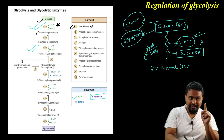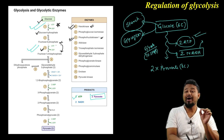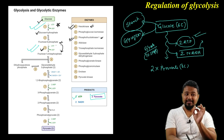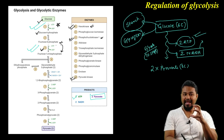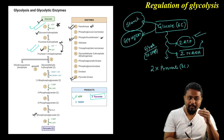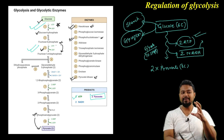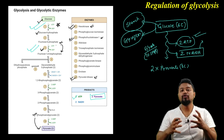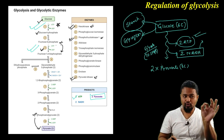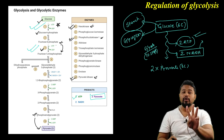The first regulatory step involves hexokinase. The next step is the third step: phosphofructokinase-1 enzyme, where fructose-6-phosphate is converted into fructose-1,6-bisphosphate using ATP. The final regulatory step involves pyruvate kinase enzyme, where phosphoenol pyruvate is converted. This kinase enzyme can regulate the glycolysis process, speeding it up or slowing it down depending on the situation of the cell. These three enzymes — hexokinase, phosphofructokinase-1, and pyruvate kinase — can be inhibited or activated.